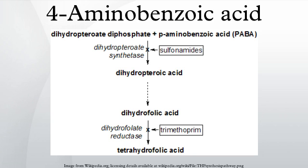Food sources of PABA include liver, brewer's yeast, kidney, molasses, mushrooms, and whole grains.